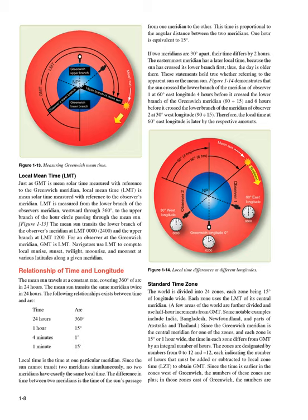Local Mean Time (LMT) is mean solar time measured with reference to the observer's meridian. LMT is measured from the lower branch of the observer's meridian westward through 360 degrees to the upper branch of the hour circle passing through the mean sun. The mean sun transits the lower branch of the observer's meridian at LMT 0000/2400 and the upper branch at LMT 1200. For an observer at the Greenwich meridian, GMT equals LMT. Navigators use LMT to compute local sunrise, sunset, twilight, moonrise, and moonset at various latitudes along a given meridian.